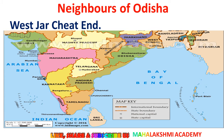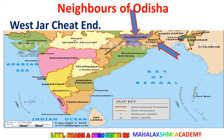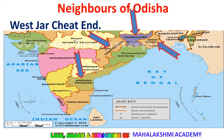Now let's move to the map. You can see Odisha in green. Jharkhand is there, West Bengal is also sharing a boundary with Odisha, Chhattisgarh is also there, and Andhra Pradesh is also there. The Bay of Bengal forms its coastal boundary. These are the neighbors of Odisha.